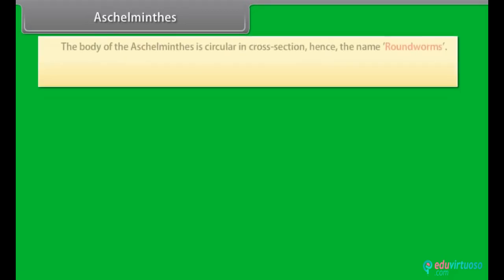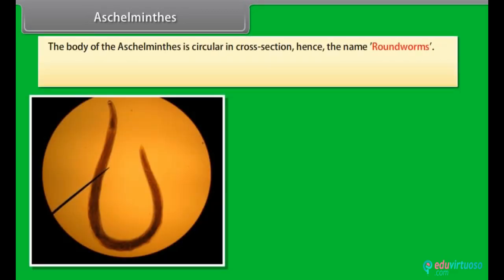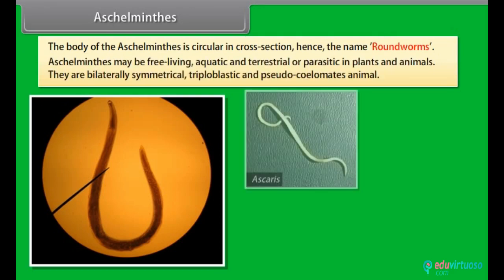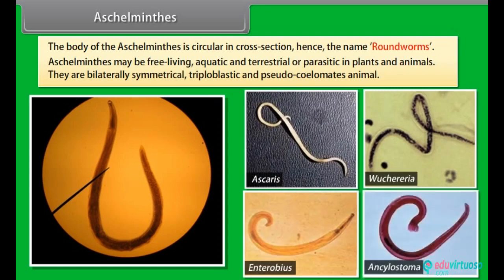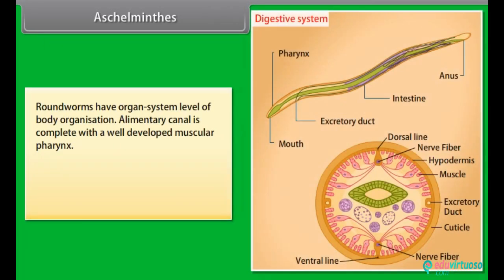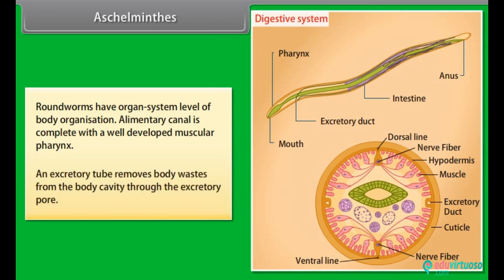Aschelminthes: The body of Aschelminthes is circular in cross-section, hence the name roundworms. They may be free-living, aquatic and terrestrial, or parasitic in plants and animals. They are bilaterally symmetrical, triploblastic and pseudocoelomate animals, with organ system level of body organization. The alimentary canal is complete with a well-developed muscular pharynx. An excretory tube removes body waste from the body cavity through the excretory pore.